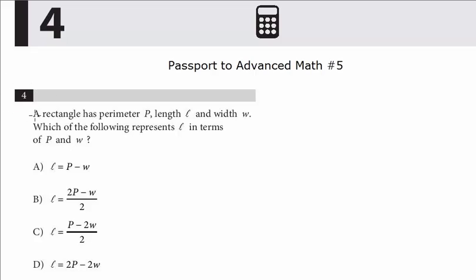We're early on in the section, so we know the difficulty level has reset. A rectangle has perimeter P, length L, and width W. Which of the following represents L in terms of P and W?